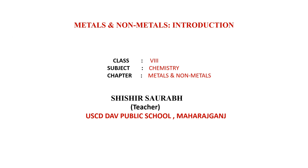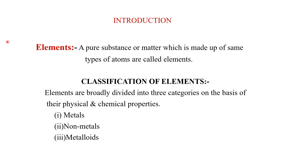Namaste students, today we are going to start the new chapter in class 8, that is metals and non-metals. Everything around us is made up of one or another type of matter. A pure substance or matter which is made up of the same type of matter is called an element. Elements are broadly classified into three categories on the basis of their physical and chemical properties: metals, non-metals, and metalloids.